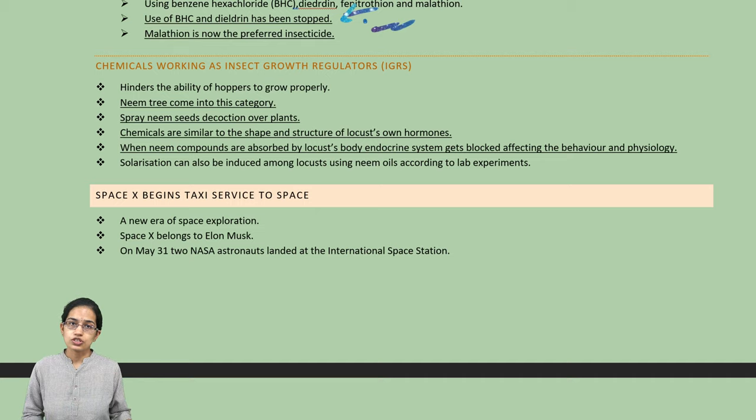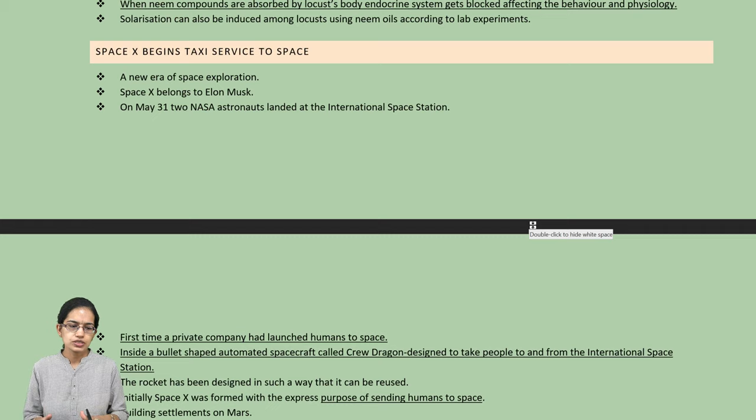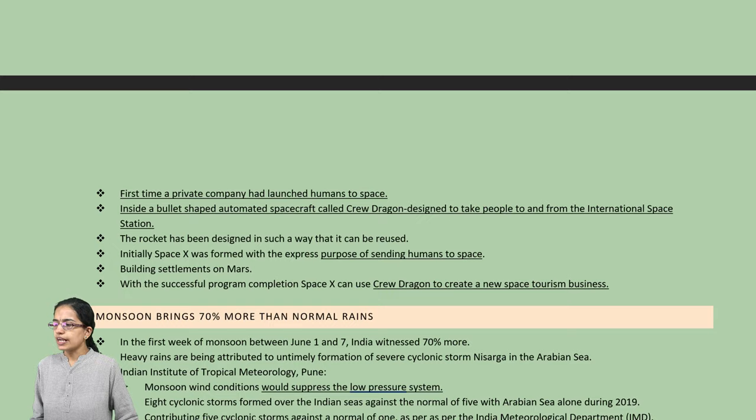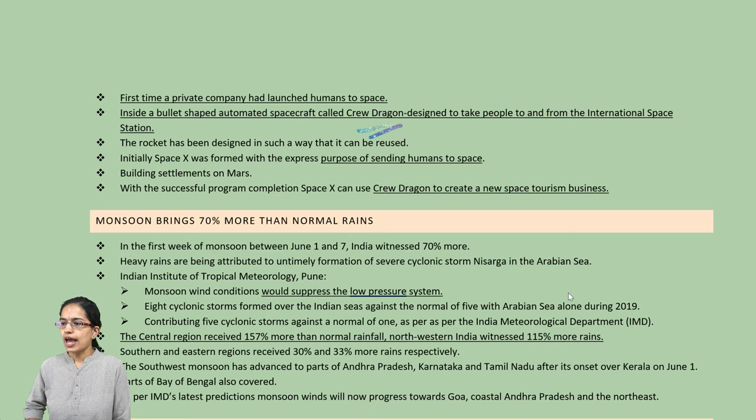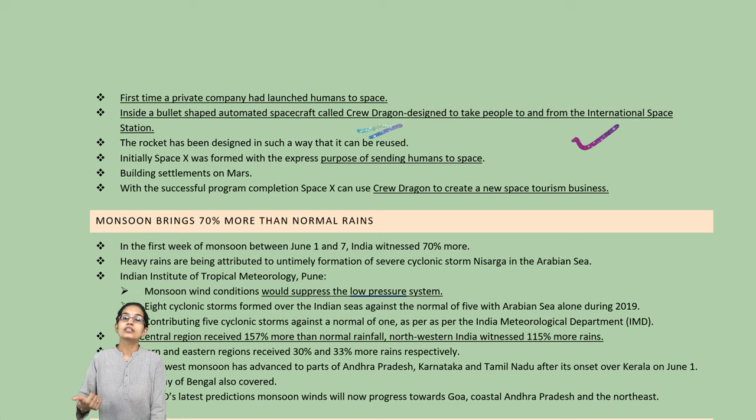The next is the SpaceX mission where private companies are trying to land human beings in space for the first time inside a bullet-shaped automated spacecraft known as Crew Dragon. Crew Dragon has been designed to take people to and from the International Space Station, and this is an important mission in the context of eventual Mars settlement. Space tourism is a new sort of business that could also evolve.